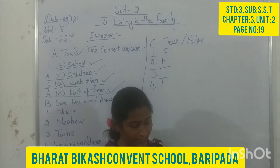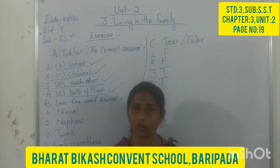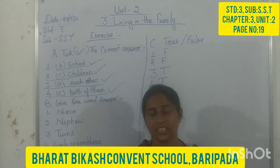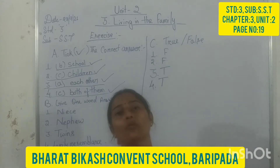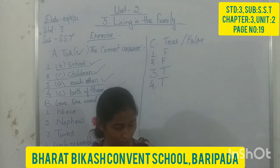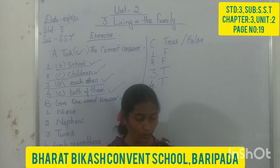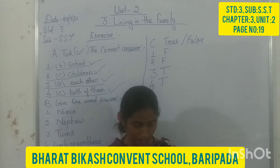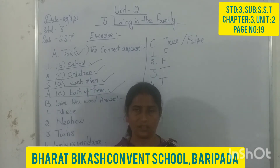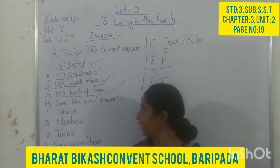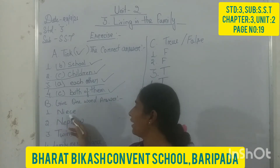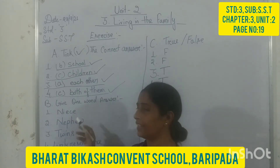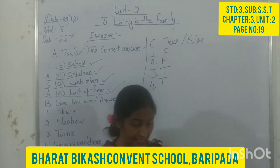Next, section B: give one word answer. You have to answer in only one word. Question number 4: the daughter of my parents who is a sister or brother to my parents is 'niece.' Spelled N-I-E-C-E.